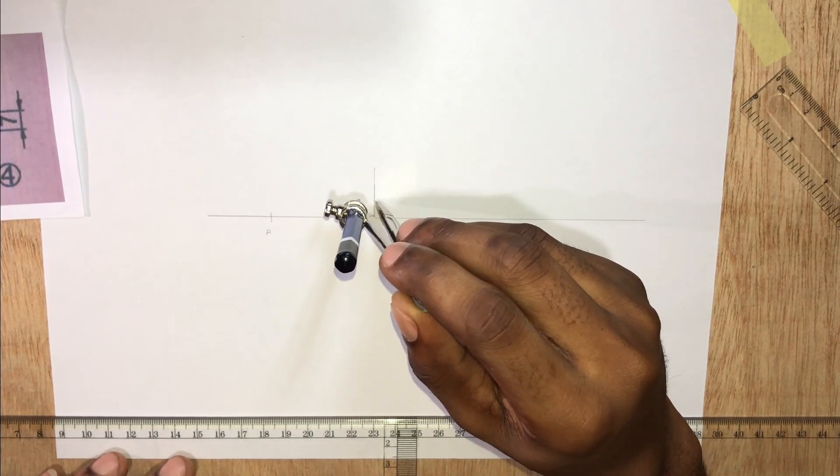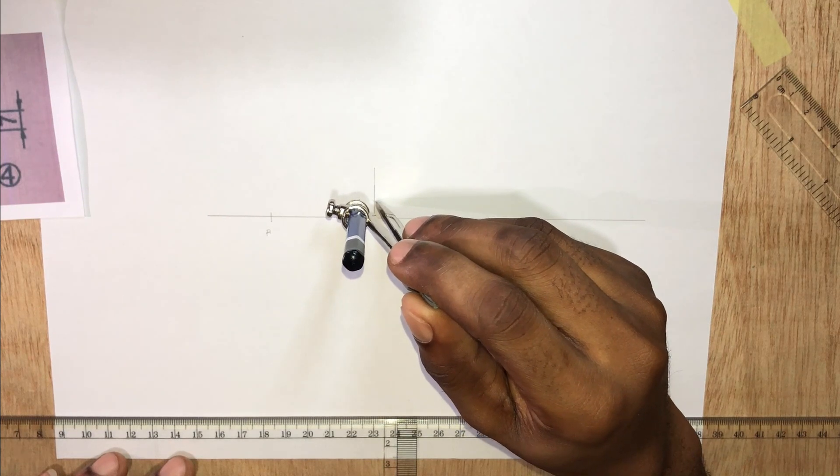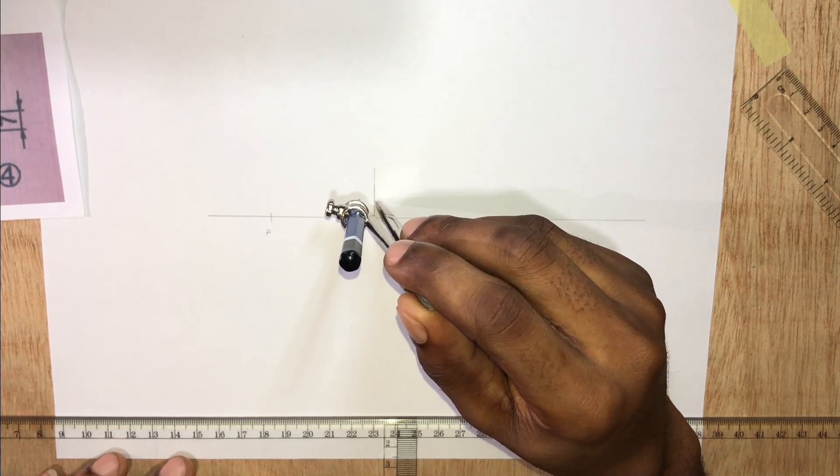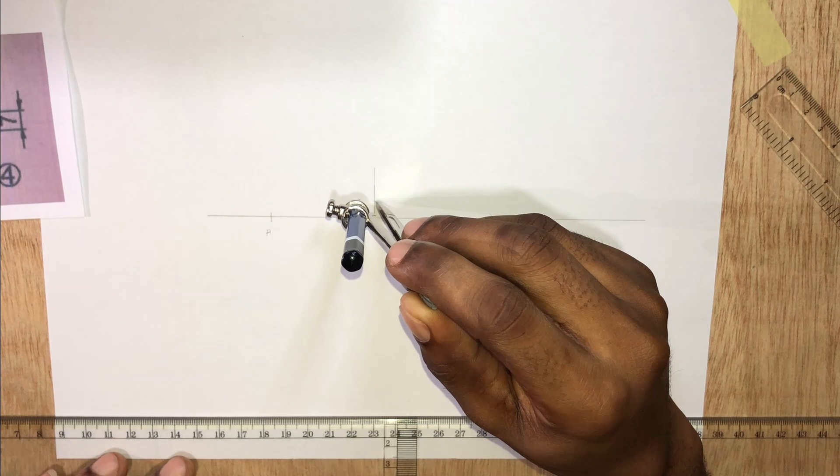Now we are going to draw a circle. Note that the circle won't be complete. We just need the parts that will show when we are done drawing the figure.